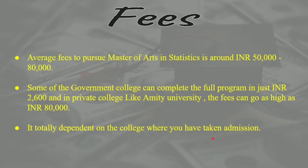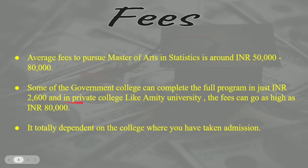Let's move to fees — this is an important topic. The average fees to pursue MA in Statistics is around 50,000 to 80,000 rupees. It may fluctuate. Some government colleges can complete the full two-year program for just 2,600 rupees per annum, while in private colleges like Amity University the fees can go as high as 80,000 rupees. It totally depends upon the college where you have taken admission.